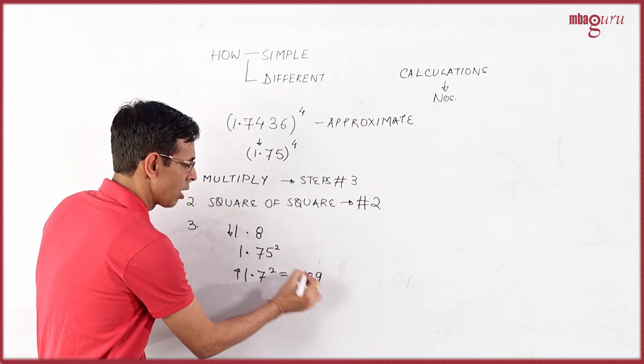So when you look at 1.7 square, now 17 square is 289. So 1.7 square is 2.89. So 1.75 square is bigger. So 1.8 square will be 3.24.